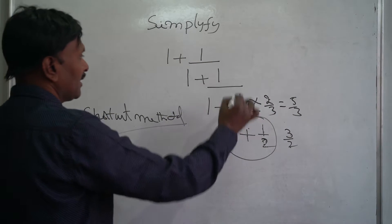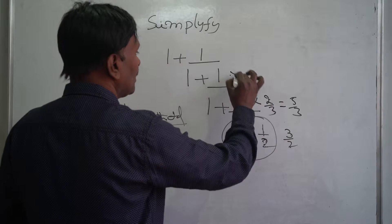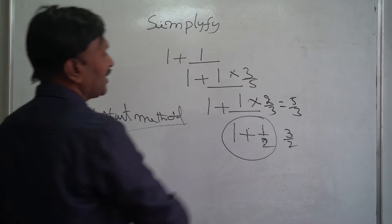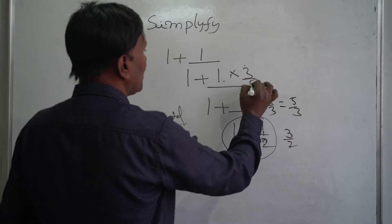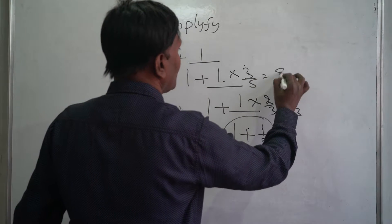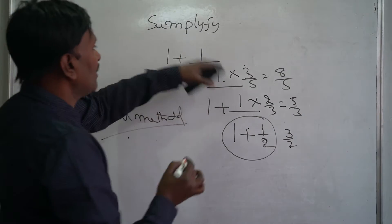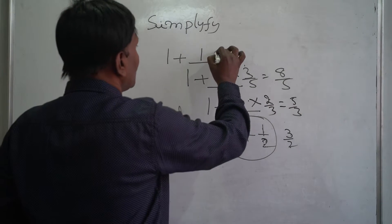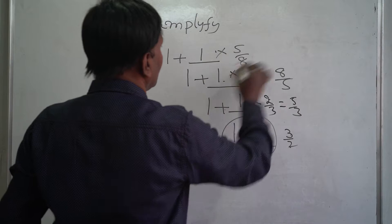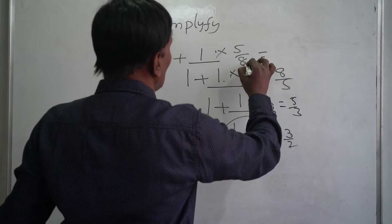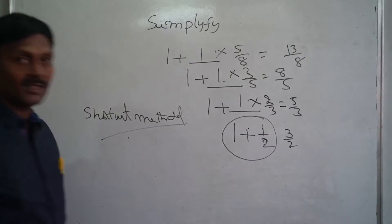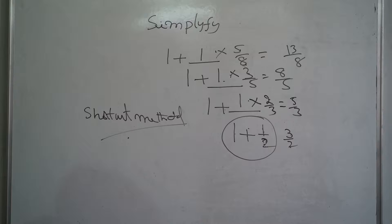Next, if it comes here it becomes 3 by 5. So 1 plus 3 by 5 is 8 by 5. If it comes with numerator side, it becomes 5 by 8. This is how much? 8 plus 5 is 13 by 8. So that is the output.